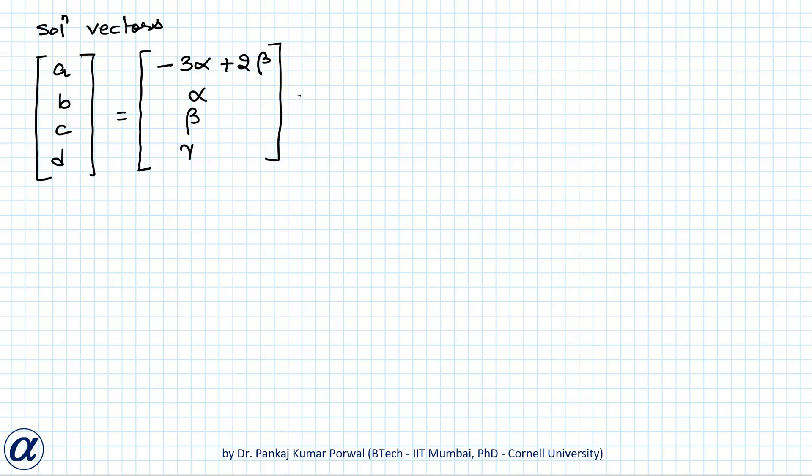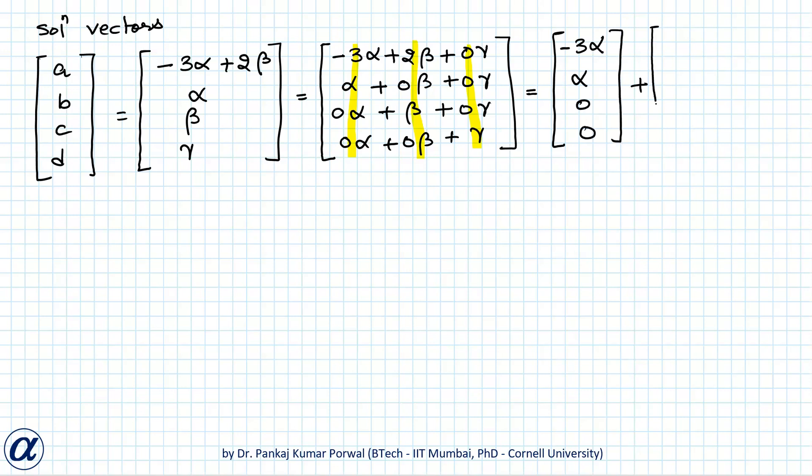And to extract my basis vectors I will rewrite this as minus 3 alpha plus 2 beta plus 0 gamma, alpha plus 0 beta plus 0 gamma, 0 alpha plus beta plus 0 gamma, 0 alpha plus 0 beta plus gamma. And I do this so that I can write this vector as sum of three vectors. So this will equal minus 3 alpha, alpha, 0, 0 plus 2 beta, 0, beta, 0 plus 0, 0, 0, gamma.